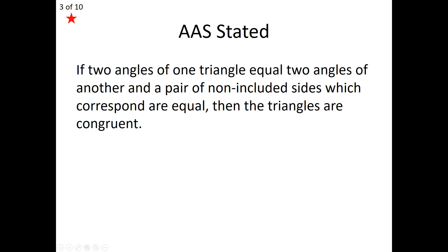Let's take a look at what angle-angle-side actually states. You're going to notice that it has a special piece of information in the setup of our given. If two angles of one triangle equal two angles of another, and a pair of non-included sides which correspond are equal, then the triangles are congruent. These pair of equal sides are not in between the two angles. We still need them to correspond — it can't just be any pair of non-included sides. They have to be a corresponding pair of non-included sides, and then we can call the triangles congruent.